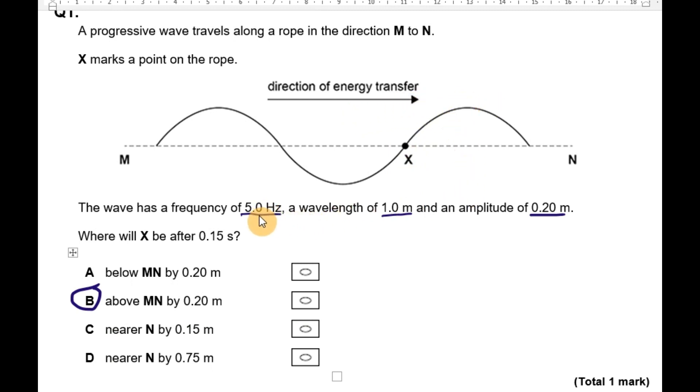We're told the frequency is 5 Hertz, and from that we can find the time period. The time period of a wave is the time it takes for one complete cycle of the wave to occur. Rearranging that equation and putting in the frequency of 5 Hertz, I find that the time period is 0.2 seconds.